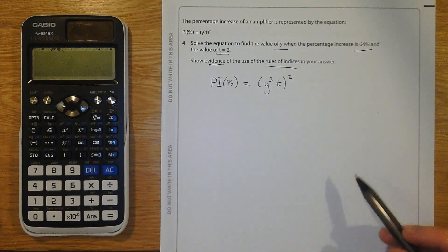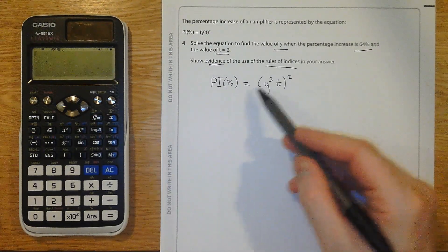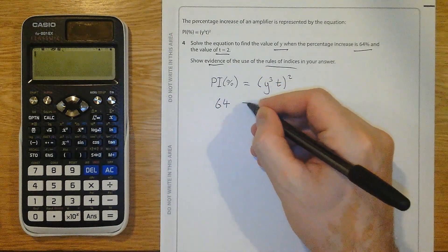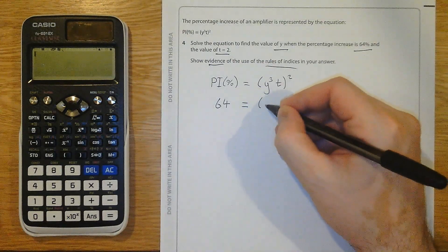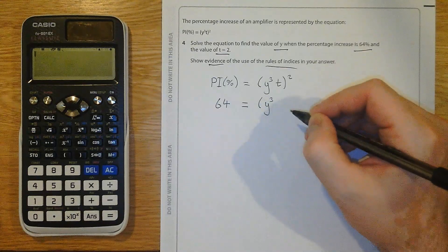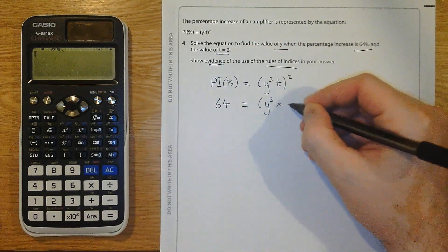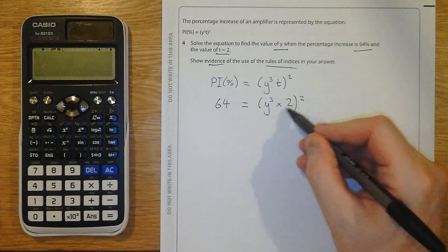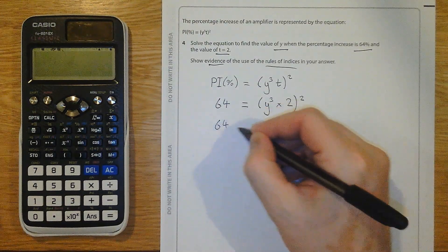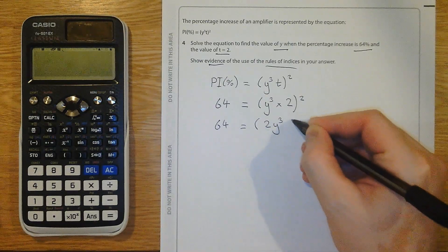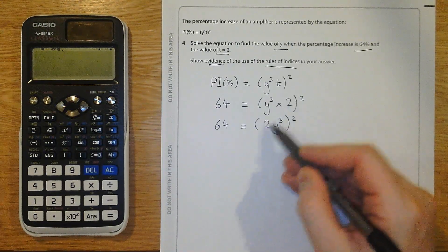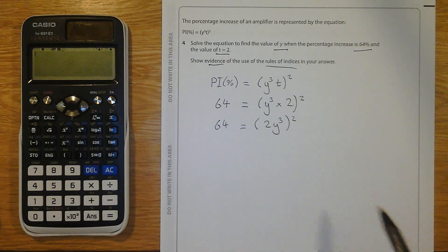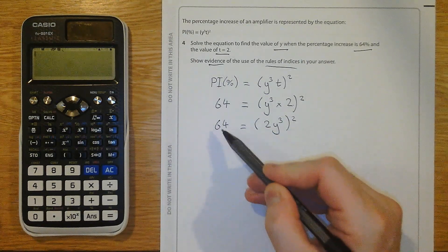I'm going to start by substituting to make this a bit less of a mess. PI is 64. Y cubed, well, y we don't know, so y cubed stays as it is. T is 2. And that's all being squared. Now, this times by 2, I'm going to rewrite that. I've put that 2 as a coefficient. I've put it in front. It's just a bit neater.